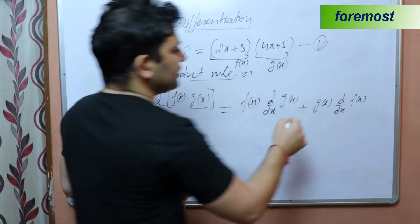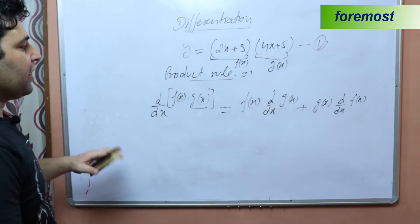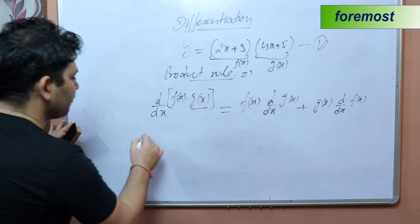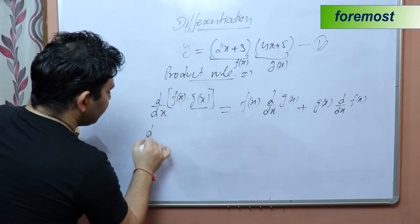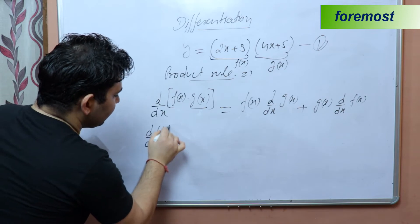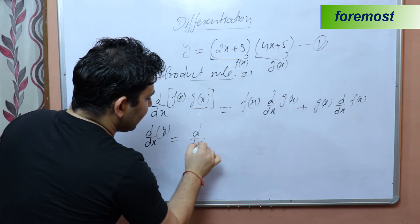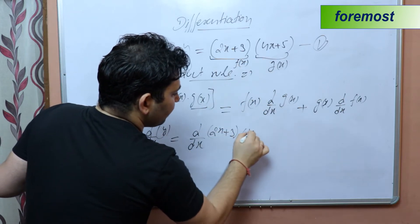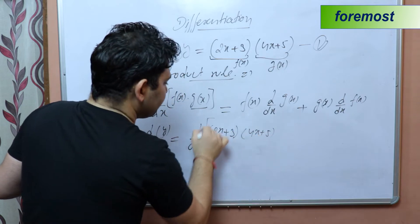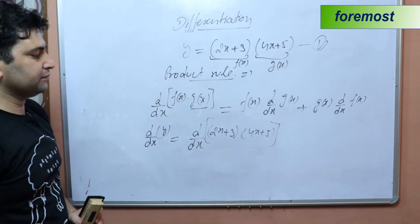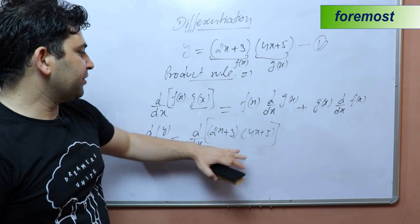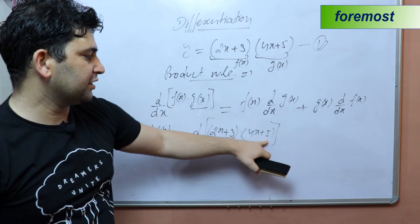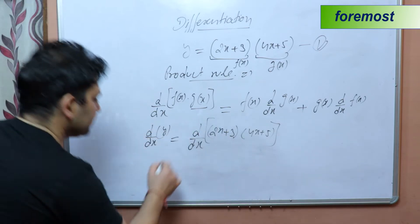On differentiating equation number one with respect to x, on the left-hand side we get d/dx of y, and on the right-hand side we get d/dx of (2x + 3)(4x + 5). Comparing with the formula, (2x + 3) is f(x) and (4x + 5) is g(x).